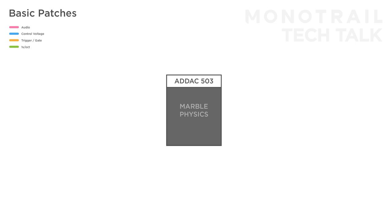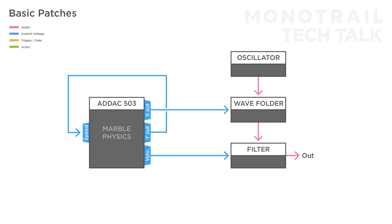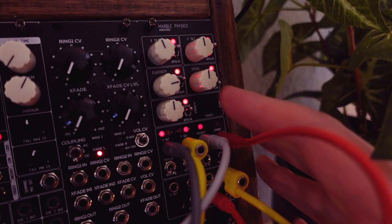Besides predictable LFOs, Marble Physics can easily create complex looping voltages and enter chaotic random voltage mode when you add some self-patching. Here, the same oscillator, wave folder, filter voice is used. The X out is modulating the wave folder and the velocity the filter. For some added craziness, the Y out is patched to self-modulate the speed of the simulation, and the bounce output is used to self-trigger the module.